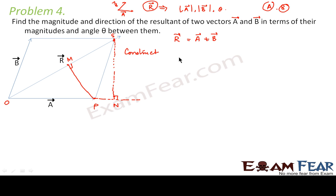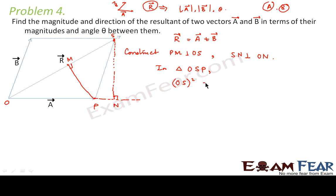We constructed PM perpendicular on OS, and SN perpendicular on ON. Now we will start our calculation. From this figure, in triangle OSN — since this angle is 90 degrees it is a right-angle triangle — by Pythagoras theorem we can say OS² = SN² + ON².